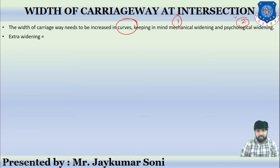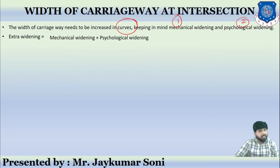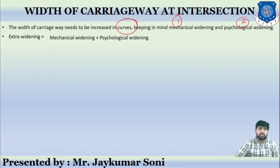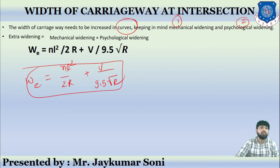You have already learned mechanical widening. Extra widening equals mechanical widening plus psychological widening. The equation is: Extra Widening = NL²/2R + V/(9.5√R), where this stands for extra widening. The N stands for number of lanes, L stands for length of wheelbase in meters, and R stands for mean radius of the curve.